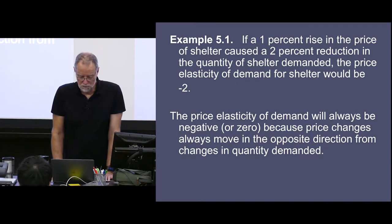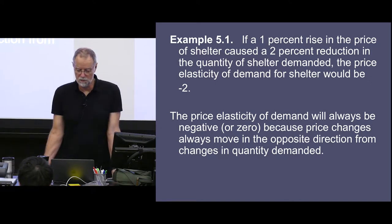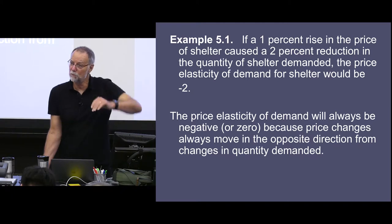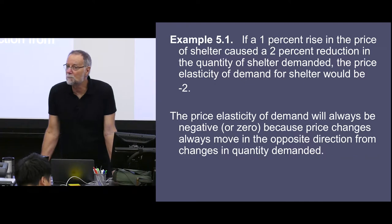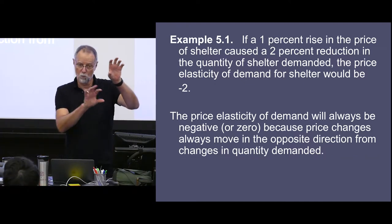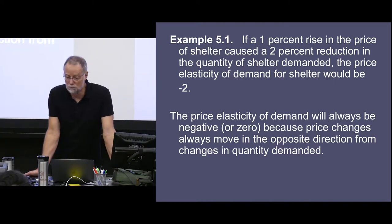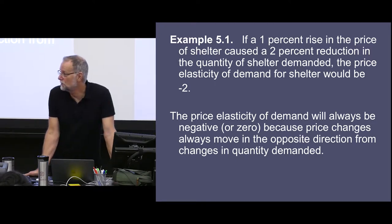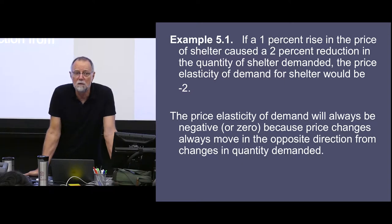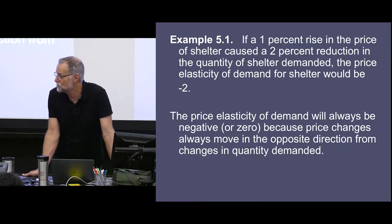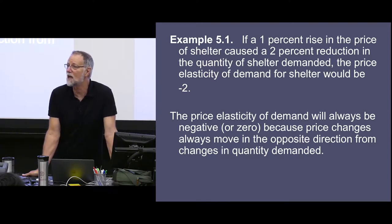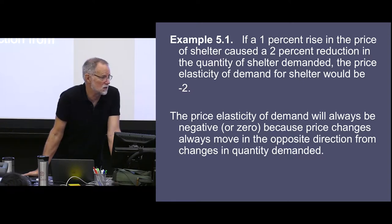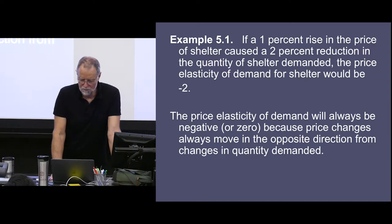If a 1% rise in the price of shelter caused a 2% reduction in quantity demanded, the elasticity would be minus 2. The percentage change in quantity is 2% — a negative movement — and the percentage change in price was 1%, so the ratio is minus 2. It's always negative for downward-sloping demand curves, and since the negative sign doesn't convey additional useful information, most economists report elasticity as its absolute value, a positive number.